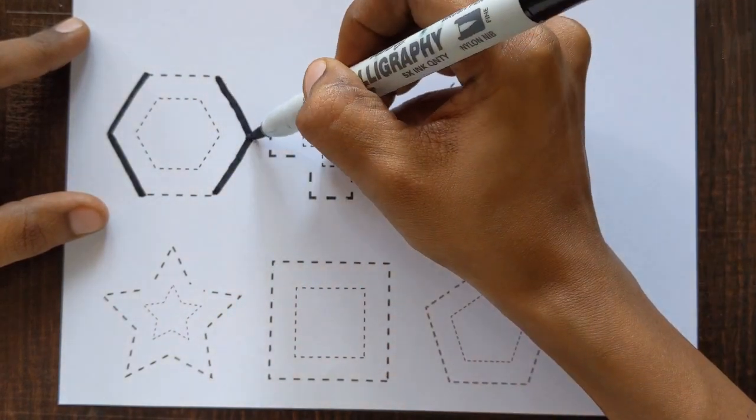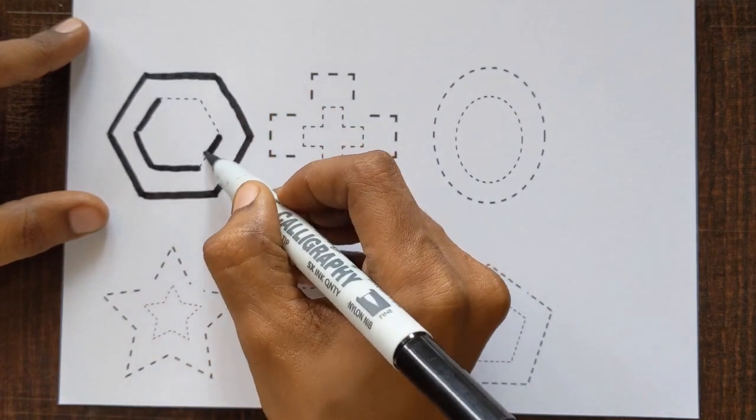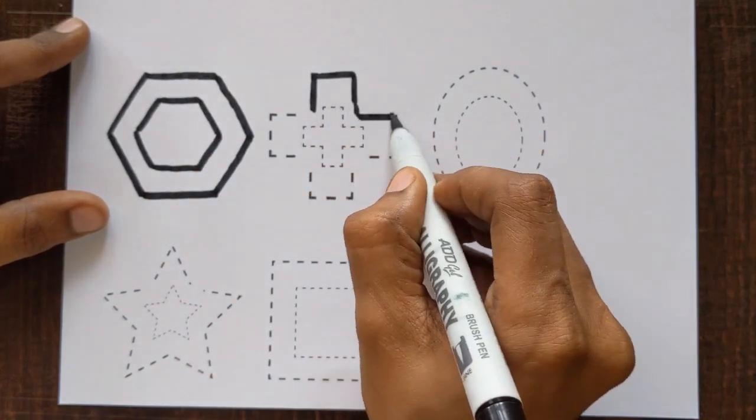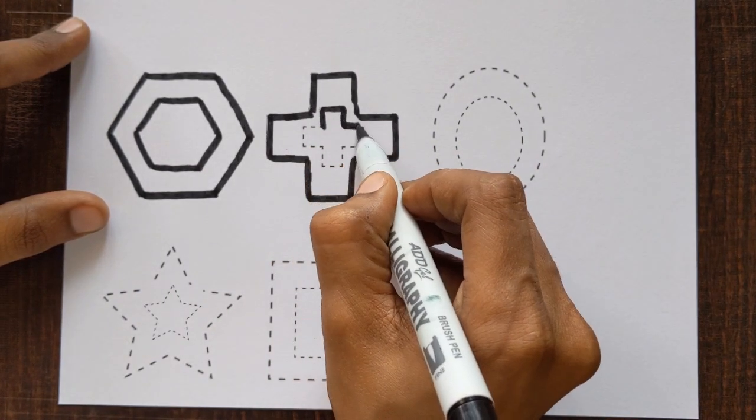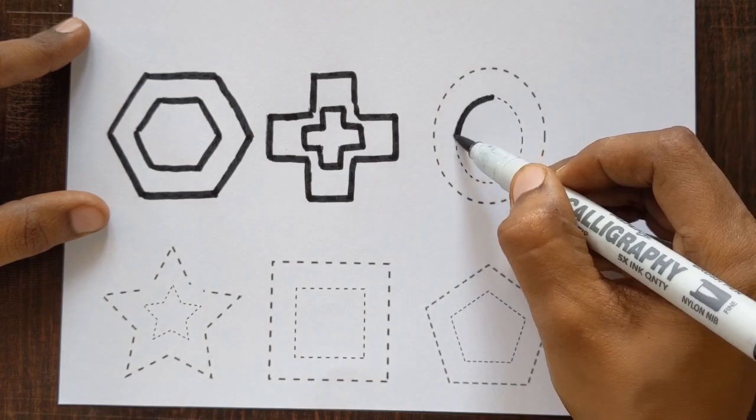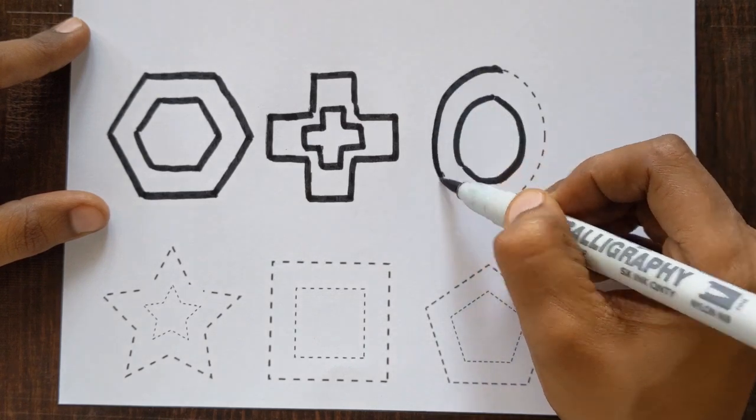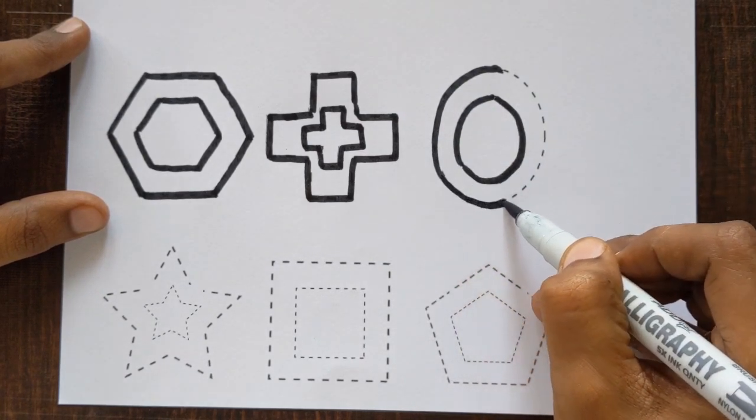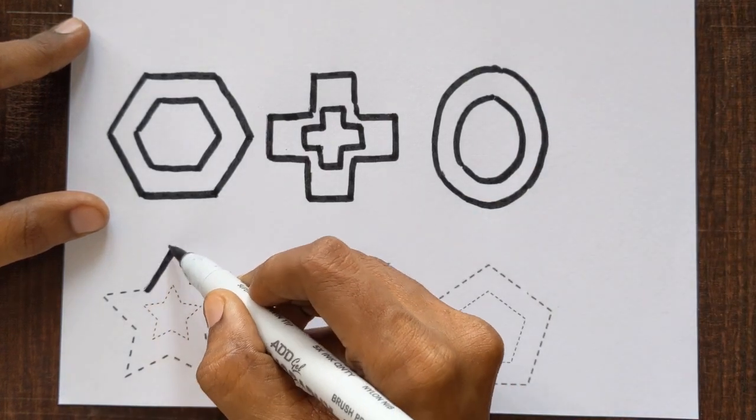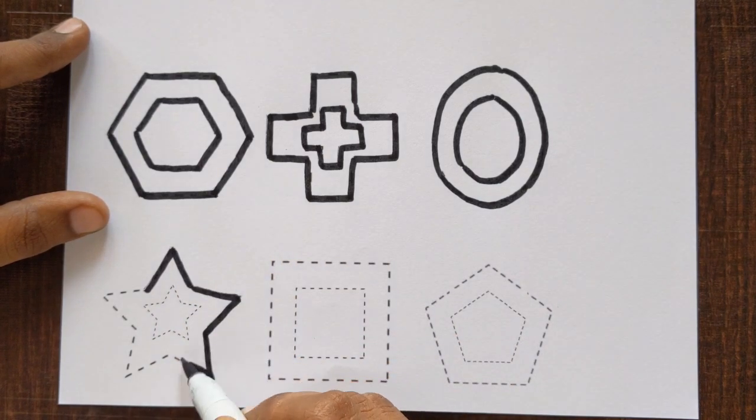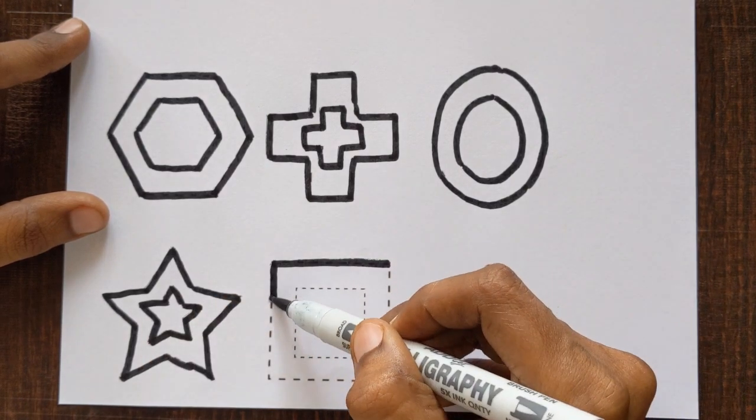Hexagon. This is a cross. Next shape is... can you tell me which shape is this? Correct, this is oval shape. Star. Next shape is square.